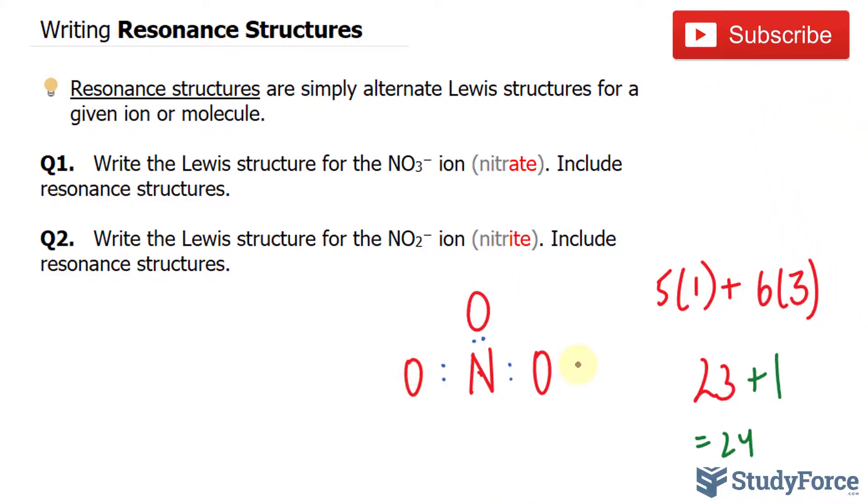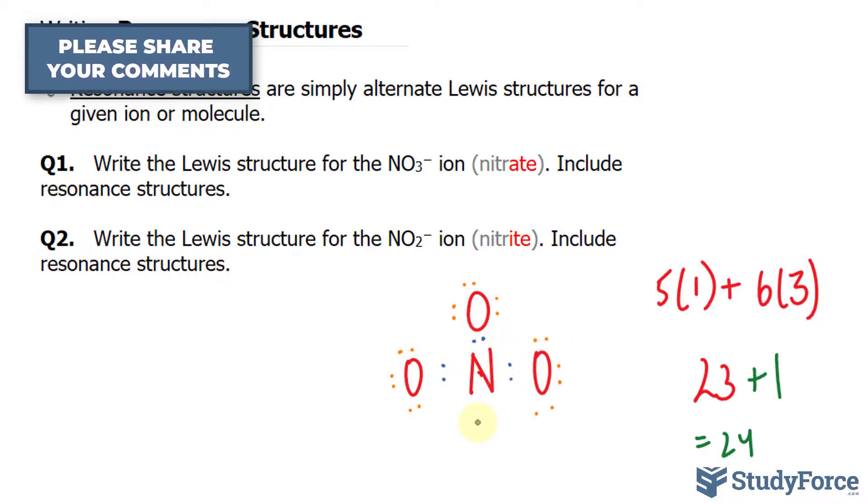Distributing the 18 remaining electrons: 1, 2, 3, 4, 5, 6, 7, 8, 9, 10, 11, 12, 13, 14, 15, 16, 17, 18. This oxygen atom has a complete octet, notice that it has eight. This one has a complete octet, and so does this. Unfortunately, nitrogen does not. It has 1, 2, 3, 4, 5, 6.